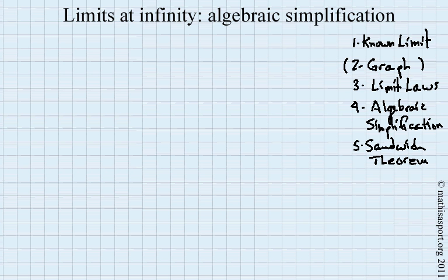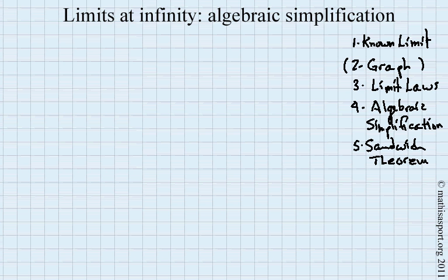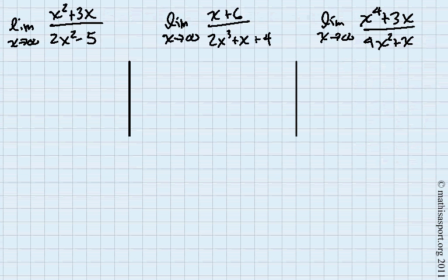I'll just illustrate this with a couple of examples. Let's clean up some space and try to find the limits of each of these expressions. Now notice first that if I were to use the quotient limit law, I would get infinity over infinity. I would get an indeterminate form, and so the first thing we're going to do is algebraic simplification.